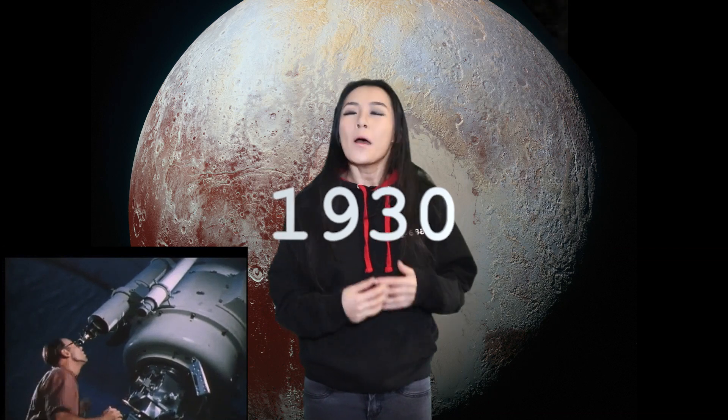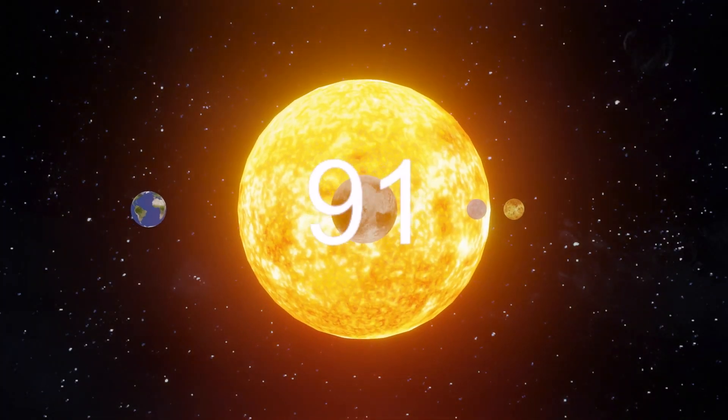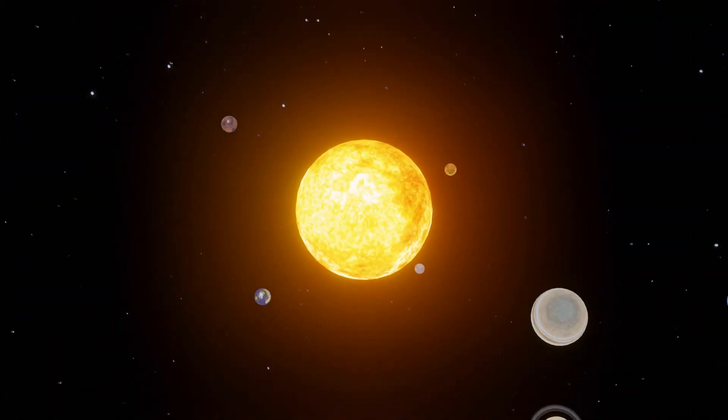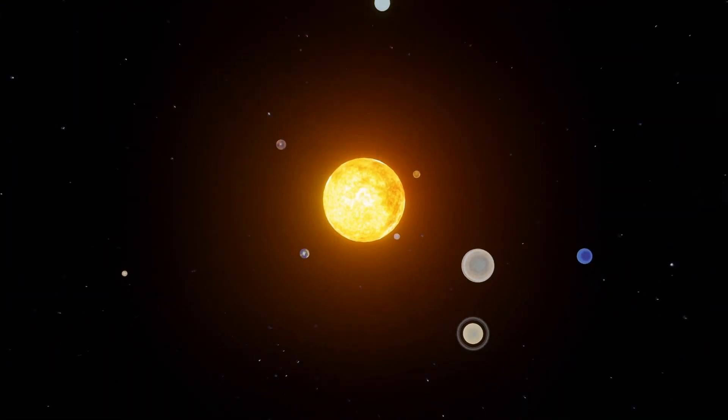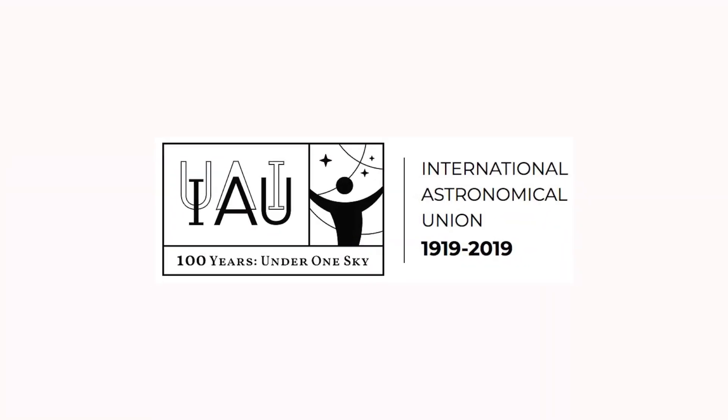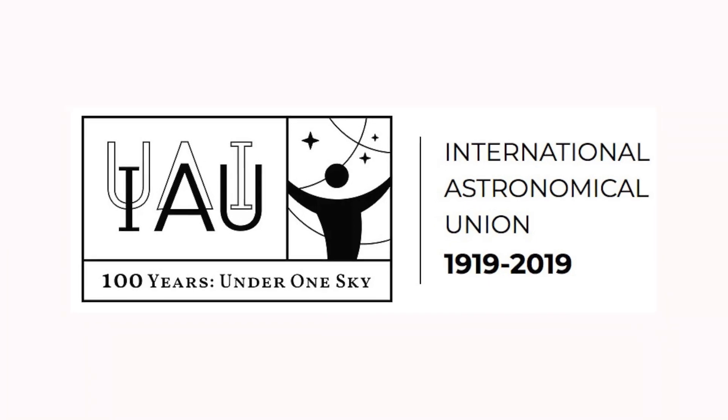Pluto was discovered in 1930 but its orbital period is 248 years. This means that it takes 248 years for Pluto to make a complete orbit around the Sun. In 2006 however, before Pluto had even made a complete orbit around the Sun since its discovery, the International Astronomical Union or IAU for short demoted Pluto into a dwarf planet.